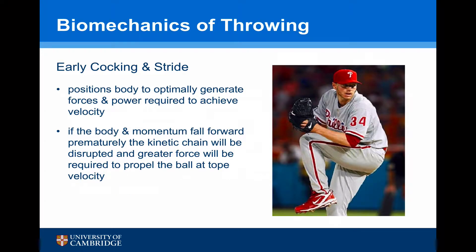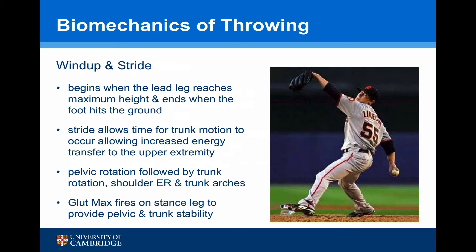In the early cocking and stride, the body is positioned optimally to generate forces and powers required to achieve the highest velocity. If the body momentum falls forward prematurely, the kinetic chain will be disrupted, and a greater force will then be required to propel the ball at top velocity. It ends when the leg reaches its maximum height in early cocking, and ends when the foot hits the ground. This stride allows time for the trunk motion to occur, which allows increased energy transfer to the upper extremity.